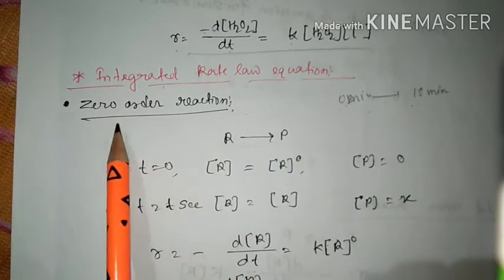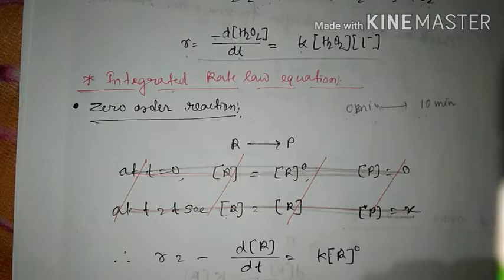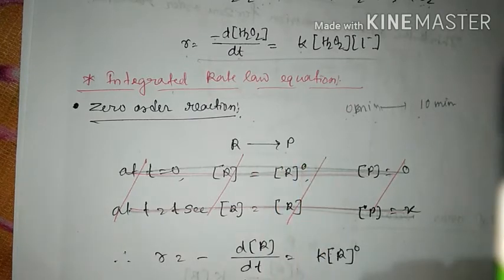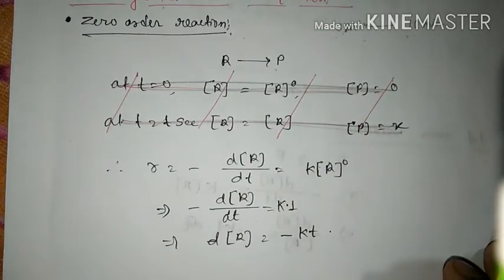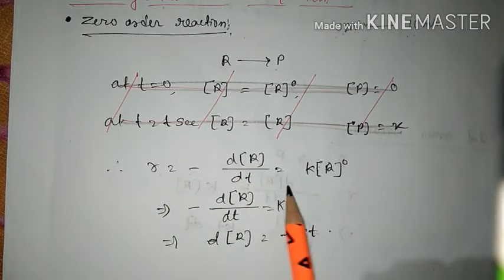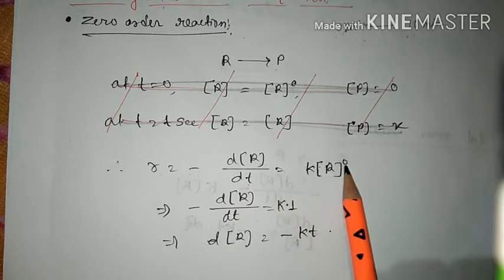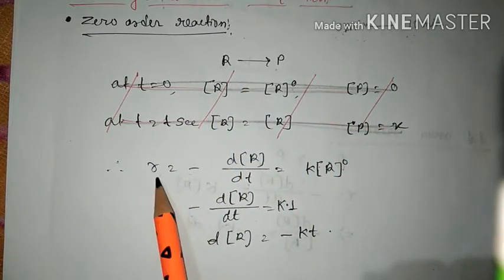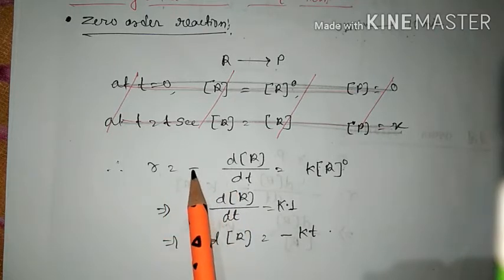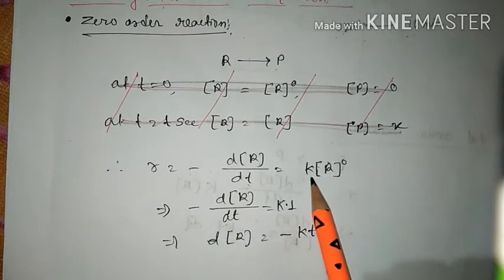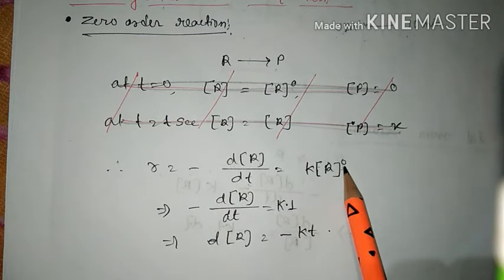Let us take an example of zero order reactions. When reactant goes to product, the rate of the reaction for zero order can be written as: rate = -d[R]/dt = k[R]^0. Since the power is zero and anything to the power 0 equals 1, R^0 equals 1. Therefore, the decrease in concentration of R divided by dt equals k times 1, which equals k.